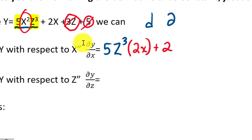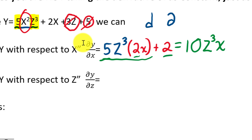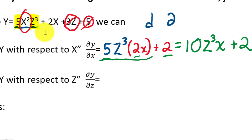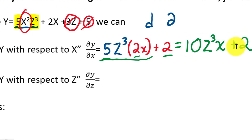Going back to simplify: 5 times 2 is 10, so we have 10z³x + 2. This function tells us that when we change x, it tells us how the output y will be changing. How fast is y going to change if we add 1 to x? This equation tells us that.